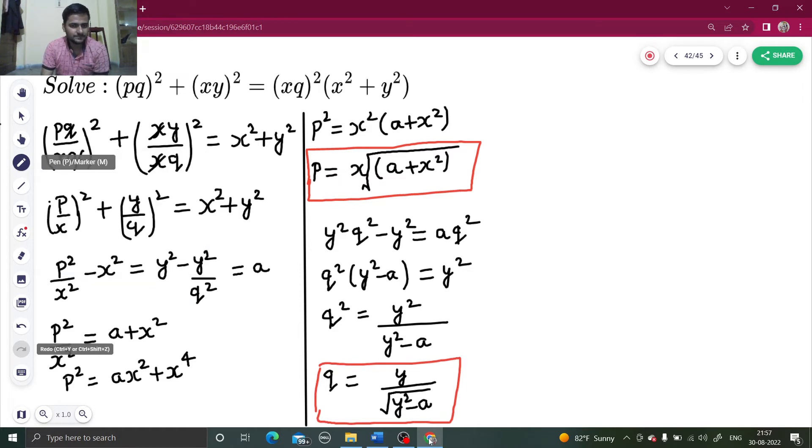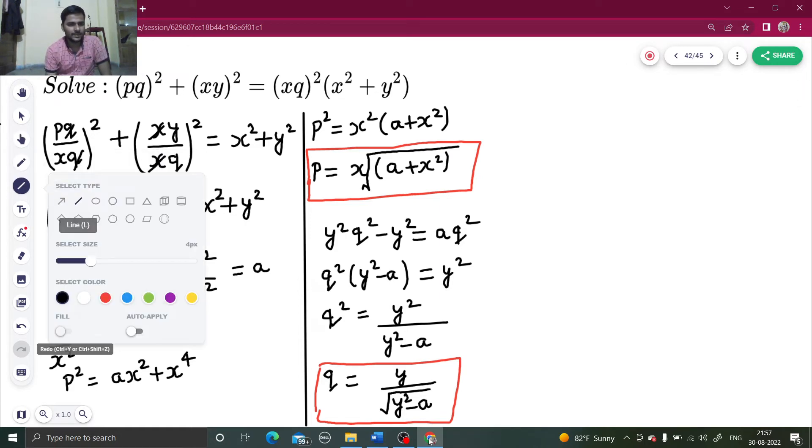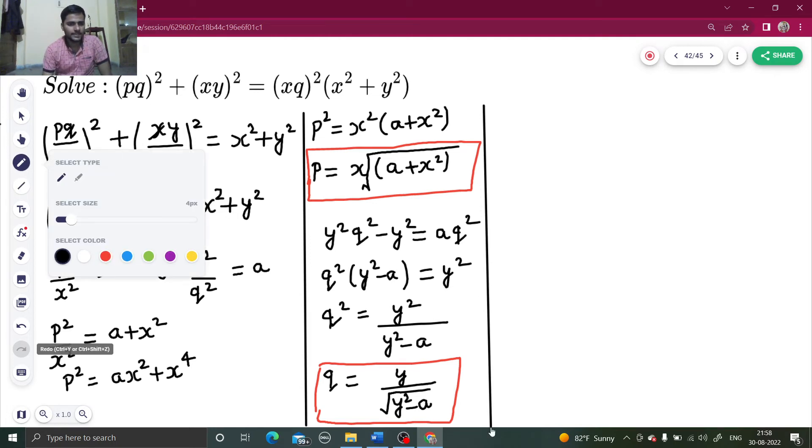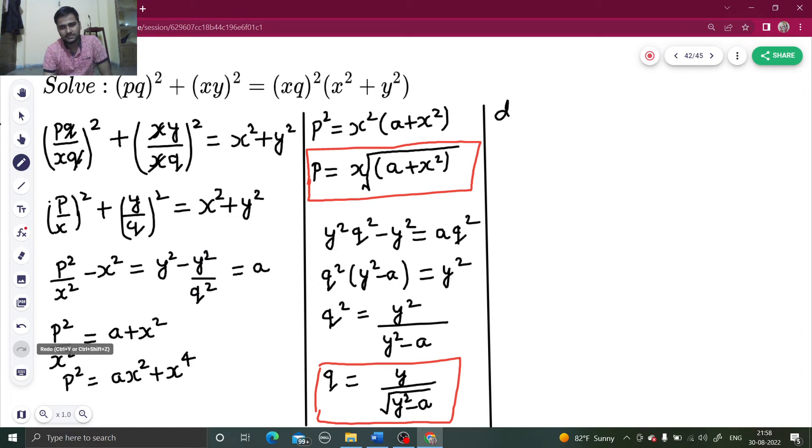What's the next step in this type of question? It is dZ equals P dX plus Q dY. So dZ equals X times the square root of A plus X squared dX plus Y divided by the square root of Y squared minus A dY.